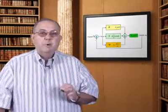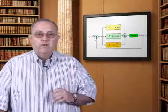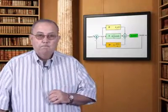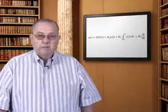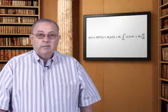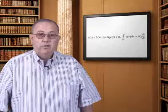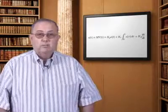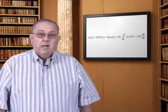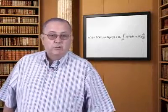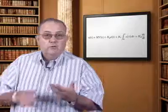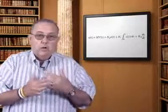Sometimes it's possible to use only one or two of these values instead of all three. Although the mathematics for loop tuning, such as the Ziegler-Nichols equations, is available and widely known, most loops are manually tuned — that is, the technician or engineer fiddles with the variables until he or she achieves the performance required. However, this seat-of-the-pants approach leads to inconsistent tuning results, with many loops tuned either too aggressively or too slowly.